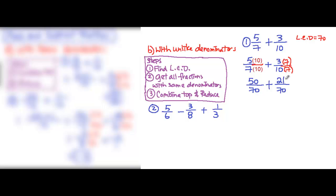Now you have the same denominator for addition. You just need to combine the top. The top will become 50 plus 21 is 71 over 70.